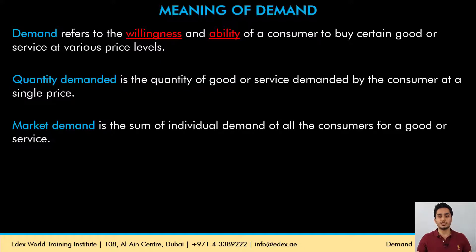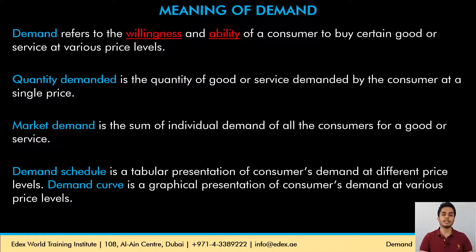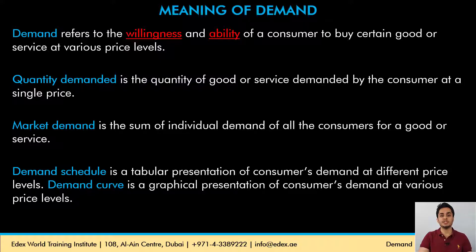The individual demand of consumers, when summed up, gives you the market demand. For example, there may be numerous consumers in an economy that demand furniture — if we add the demand of all consumers in the economy, we get the market demand for furniture. The demand schedule is the tabular presentation of what the consumer is willing and able to buy at different prices, and the demand curve is the graphical presentation of the same data.